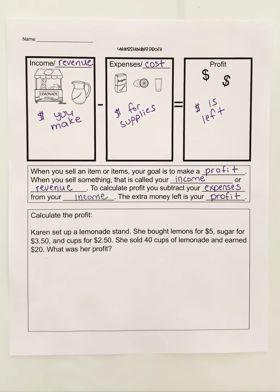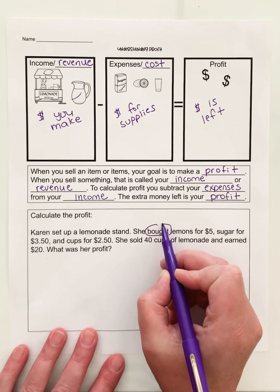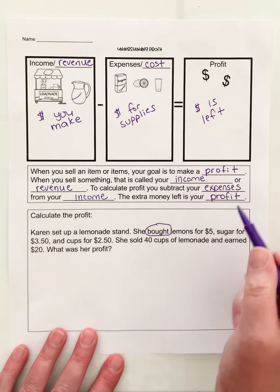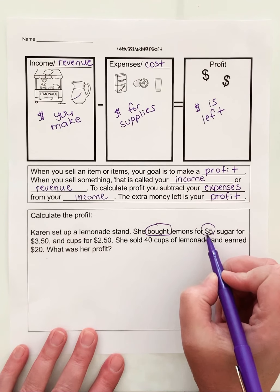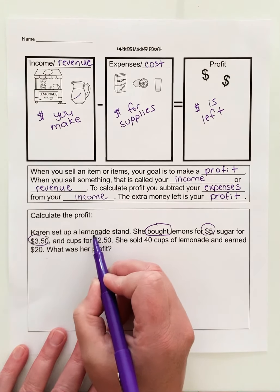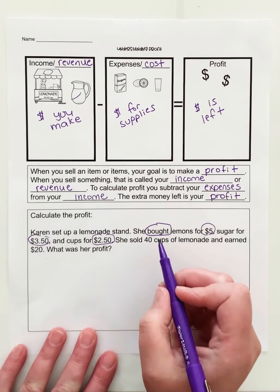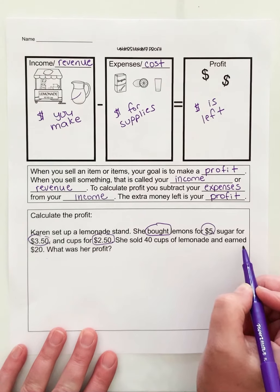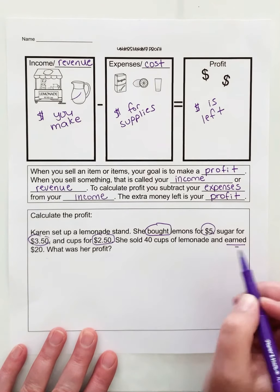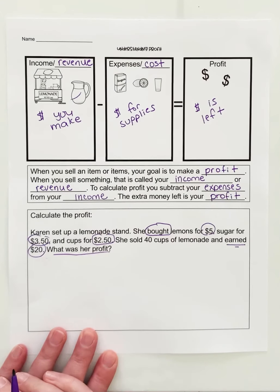So here's the story. Karen set up a lemonade stand. She bought, that tells me she's buying something. She bought lemons for $5, sugar for $3.50, and cups for $2.50. She sold 40 cups of lemonade and earned $20. What was her profit?